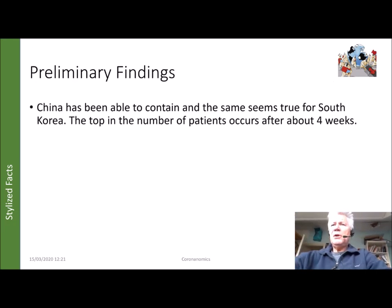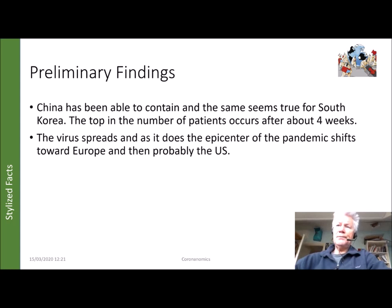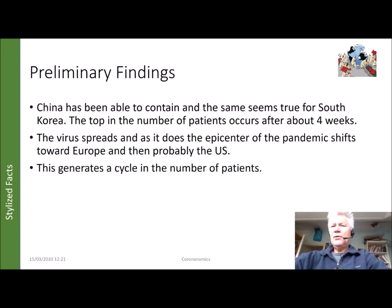The preliminary findings are: China has been able to contain, and the same seems true for South Korea, with the peak in number of patients occurring after about four weeks. We also know the virus spreads, and as it does, the epicenter shifts towards Europe and then probably to the United States — but it may also shift back to China when they relax containment measures. This generates a cycle in the number of patients globally.